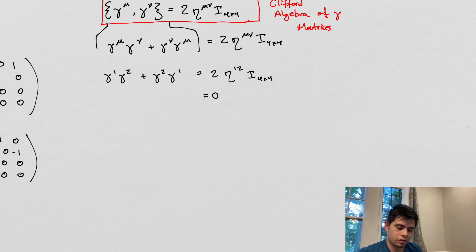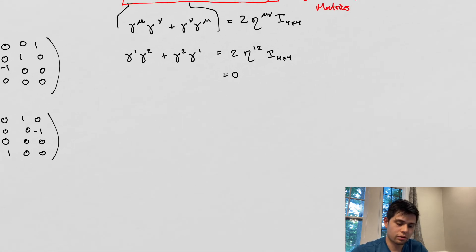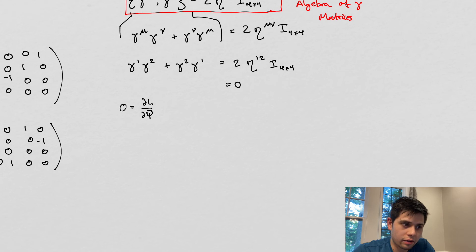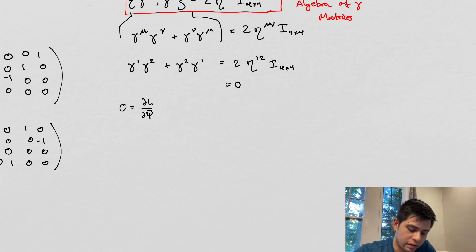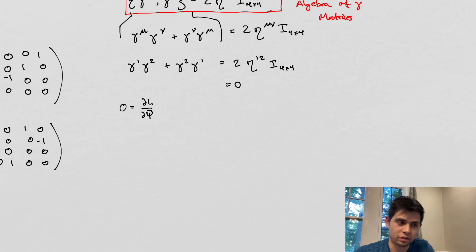We can also consider applying the Euler-Lagrange equations to our Dirac Lagrangian. There's so much to the Dirac equation — so many independent things you can do with it — so I'm going to provide a summary sheet of what we've covered so far. I'm going to do exactly what the book does, which is to cover the Euler-Lagrange equation for the adjoint spinor — the bar-phi — because doing it for phi directly is a little more nuanced.